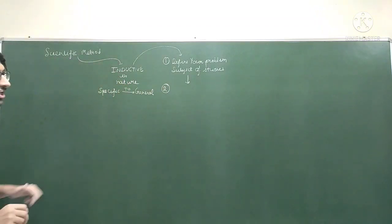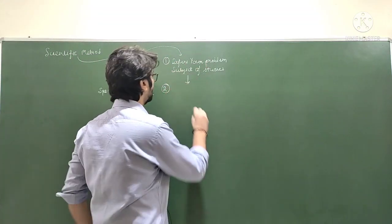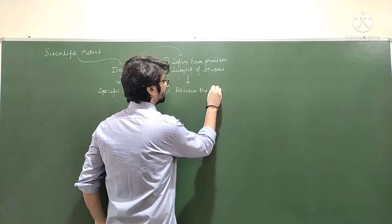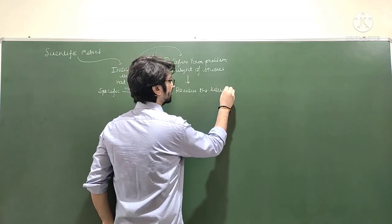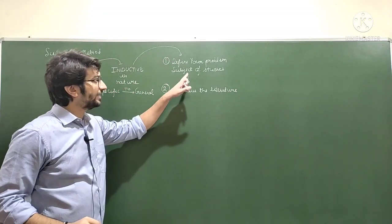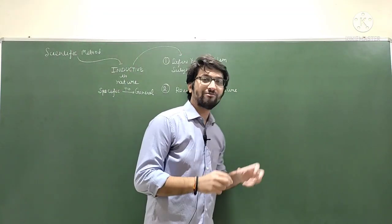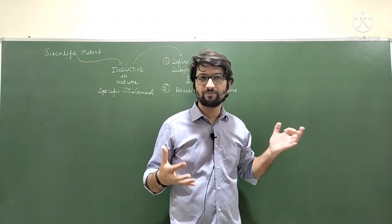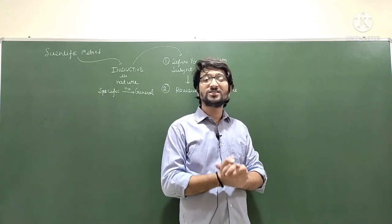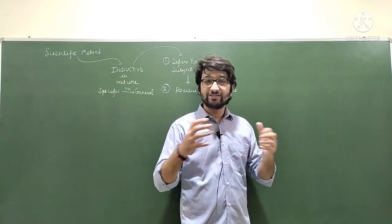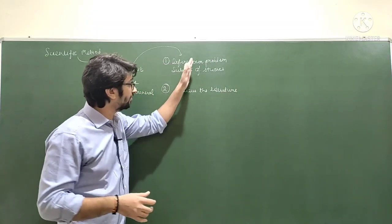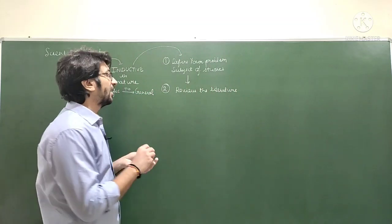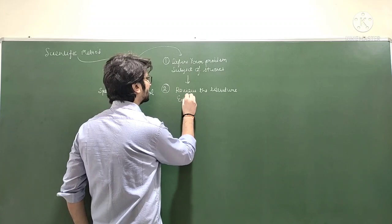The second step, once you have defined your problem, is to review the literature. You look at what existing theories there are, what problems pertain to this subject, what existing scientific literature is available, whether any of it can be used to study and solve this problem — drawing on your educational background and your own thinking.